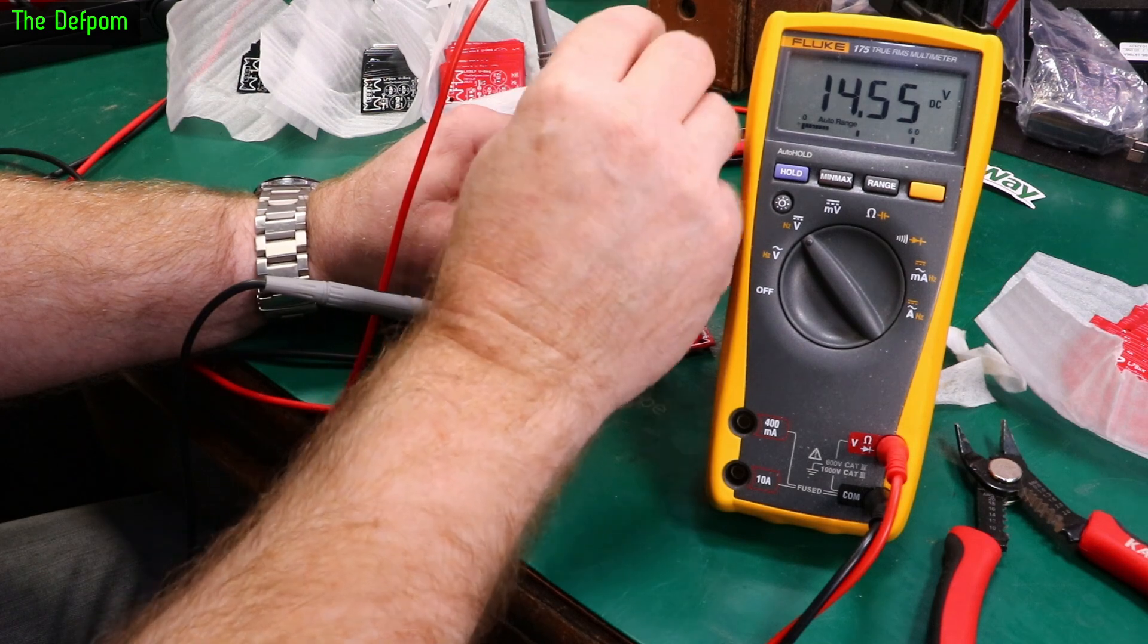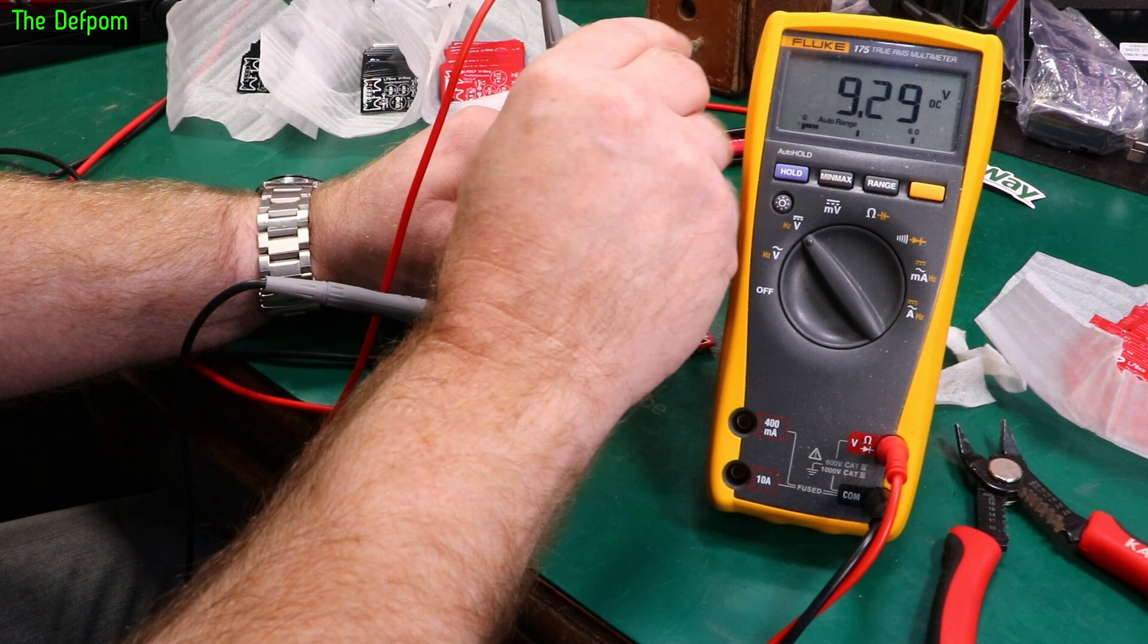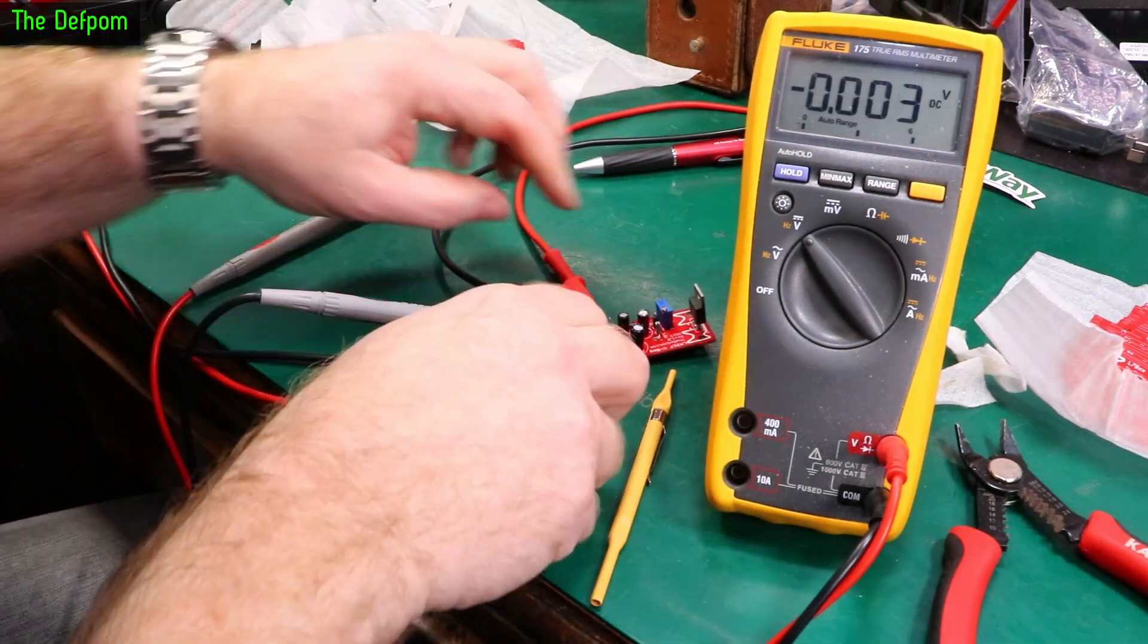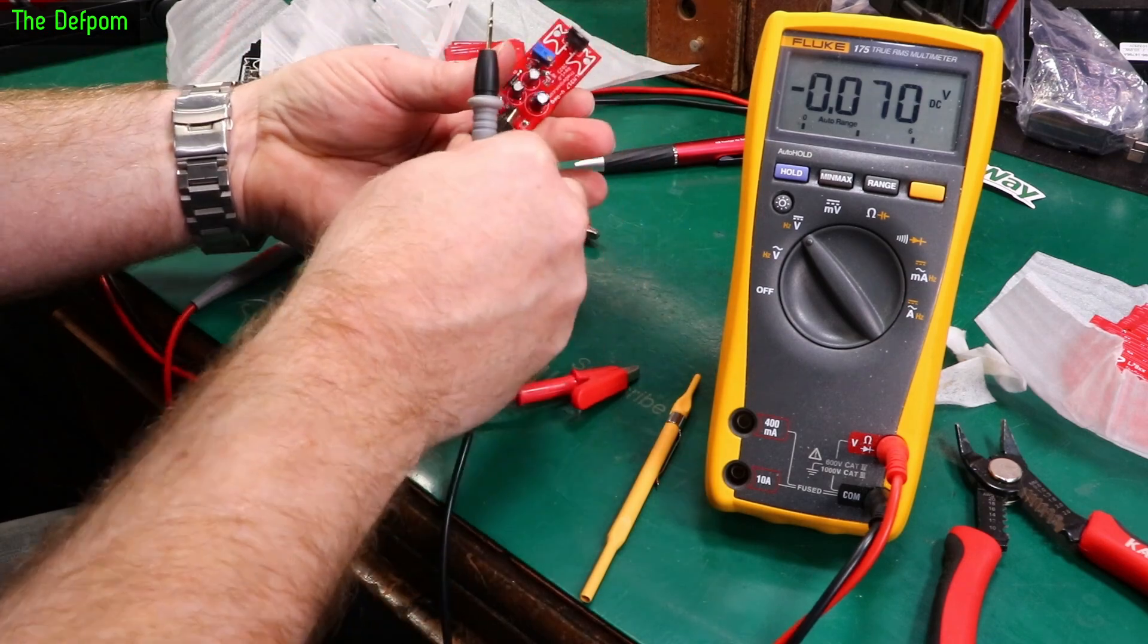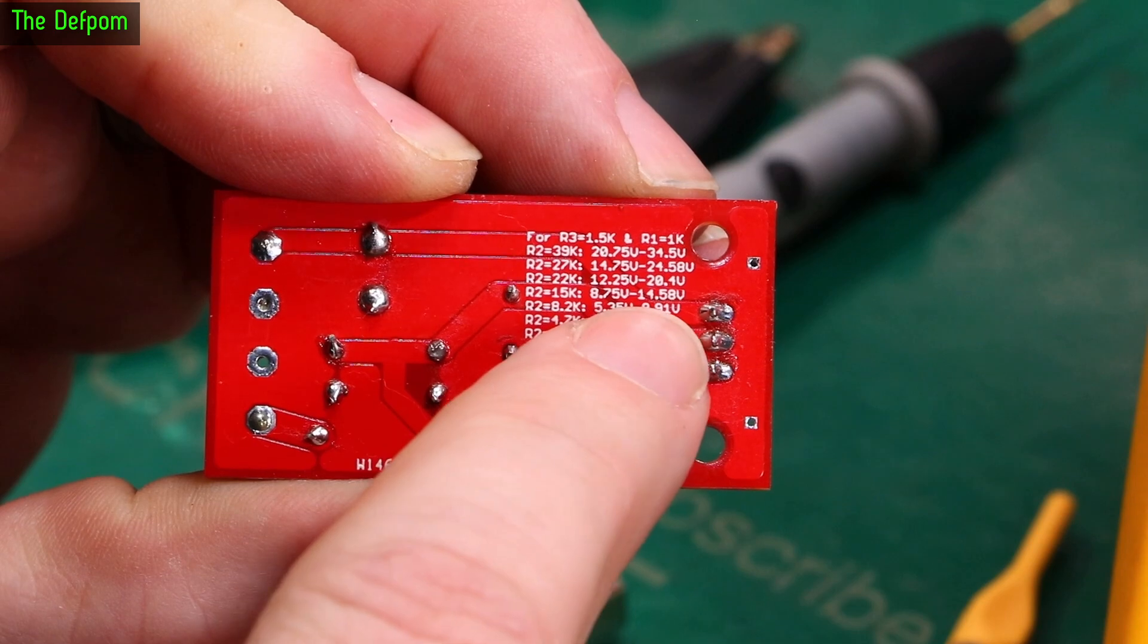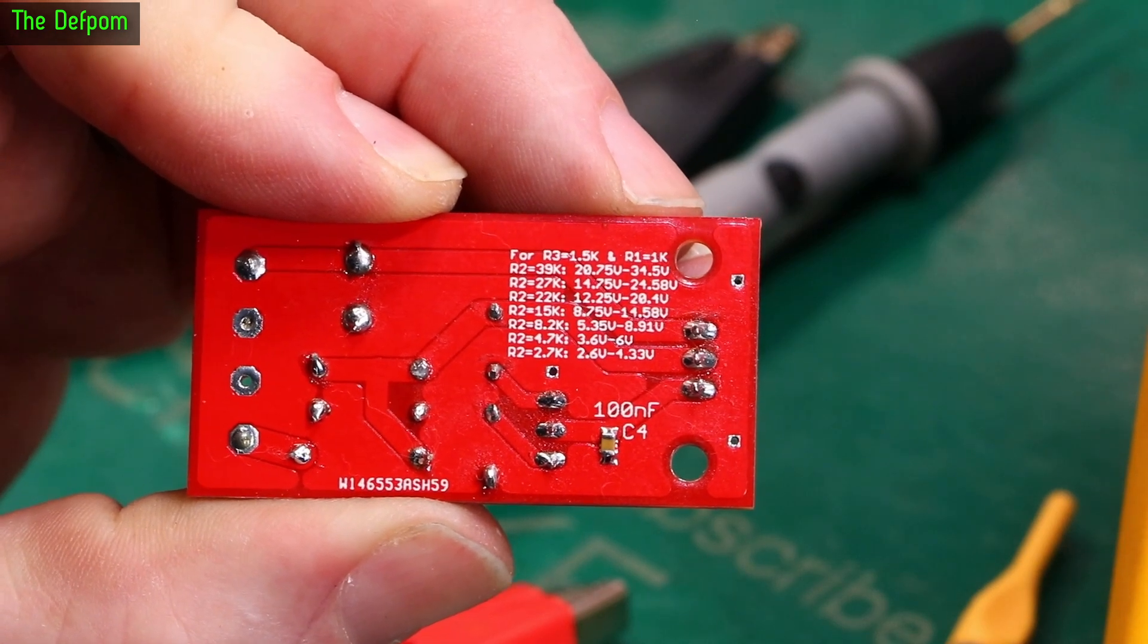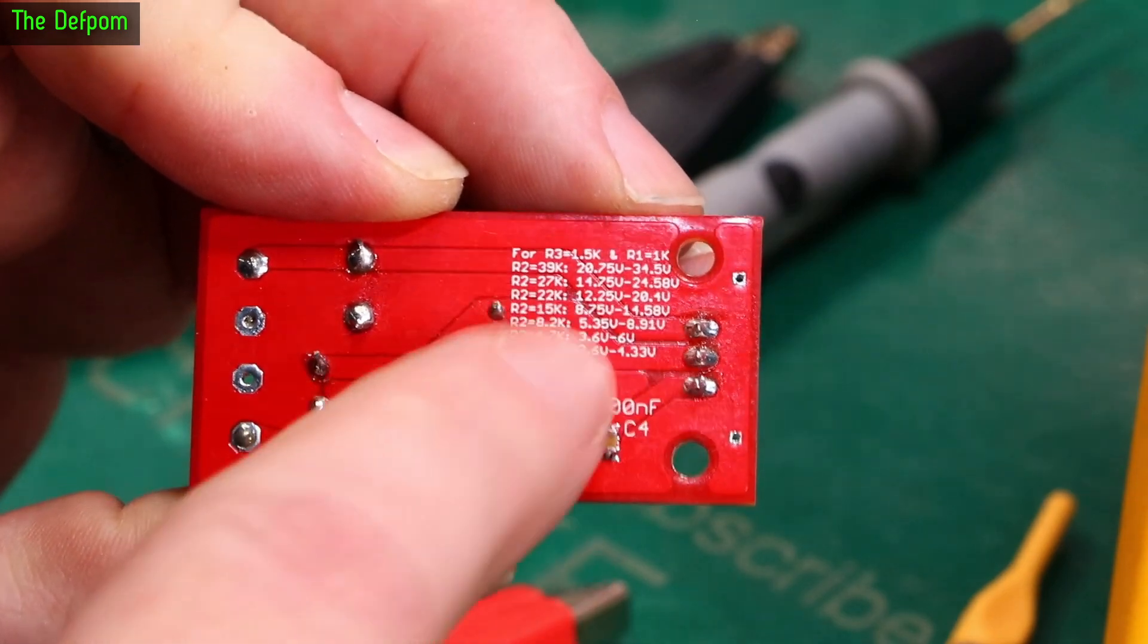So 14.55. Remember that number. And we'll see how close the theoretical values were. 8.66. Okay. 8.66 to 14.55. What did I say I was going to get? 8.75 to 14.58. So I'm very slightly down. It could be resistance tolerances. But it's basically right. It works perfectly. So my theoretical values worked out. Okay.